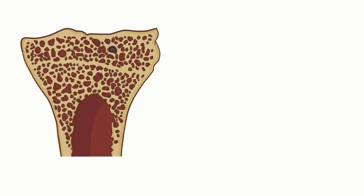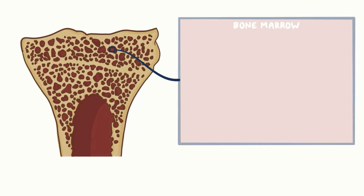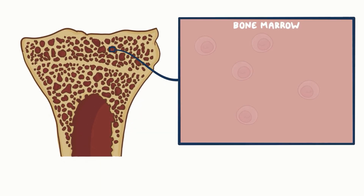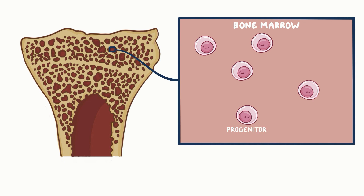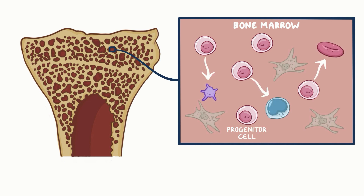Many cells in the bone marrow are hematopoietic progenitors, which are precursors to the different types of blood cells. In addition to these cells, there are fibroblasts, which are connective tissue cells.